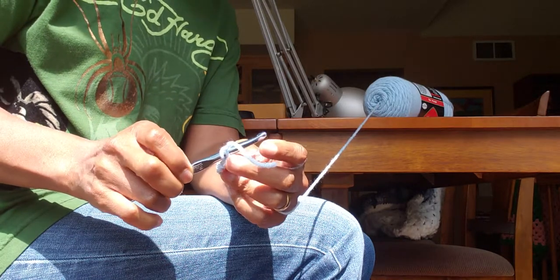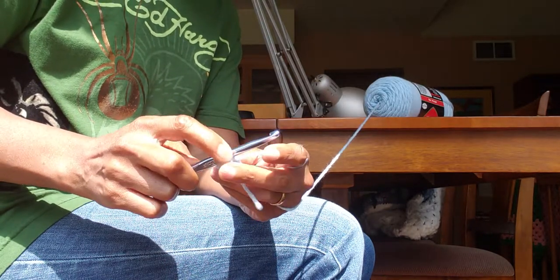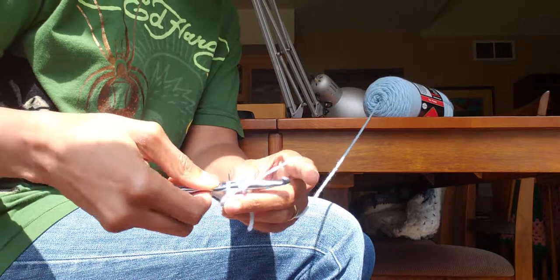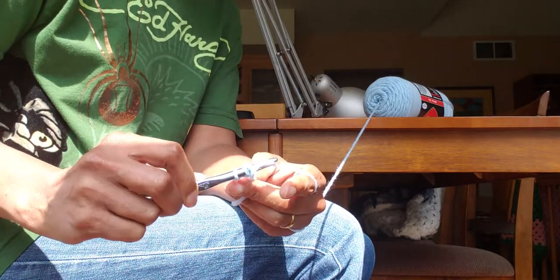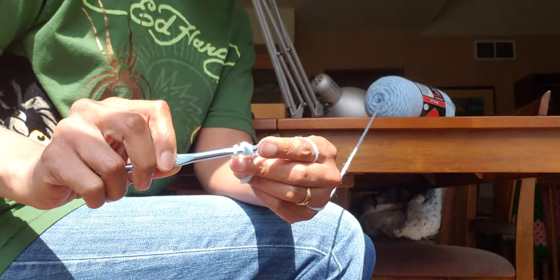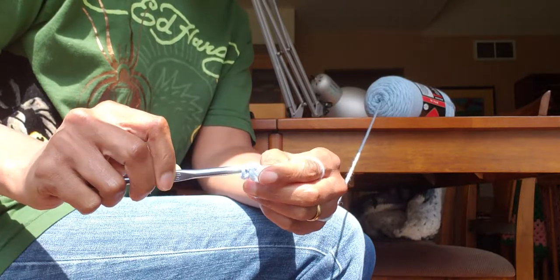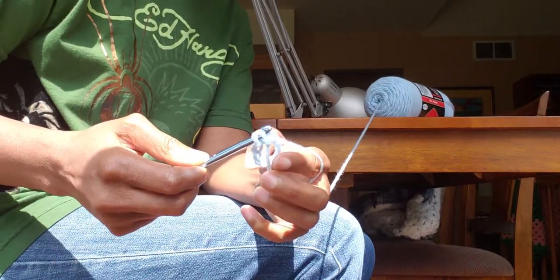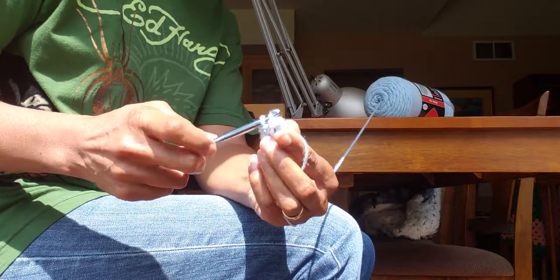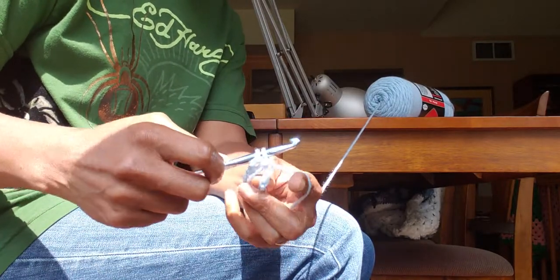So like that, I will grab the yarn, hook it through, and bring it through that first loop. And it gives me two loops on the needle. And then I hook it through and bring it through those two. Bam.